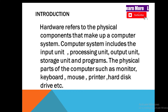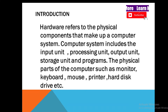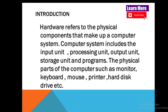A computer system includes the input unit, processing unit, output unit, storage unit, and programs. Input units are also hardware, processing units are also hardware, output units are also hardware, and storage units are also hardware. But programs are software. So physical parts that we can touch are called computer hardware.